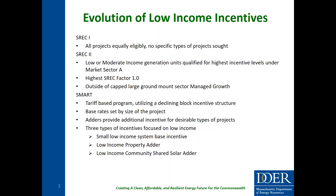We are currently developing the next incentive program called SMART — the Solar Massachusetts Renewable Tariff Program. It's a tariff-based program utilizing a declining block incentive structure where base rates are set by project size. We also have adders to provide additional incentives for desirable project types, including low-income projects. Under SMART, we have three different types of incentives focused on low-income project development: a specific incentive for small systems, an incentive for low-income properties, and a community shared solar incentive aimed at low-income projects.